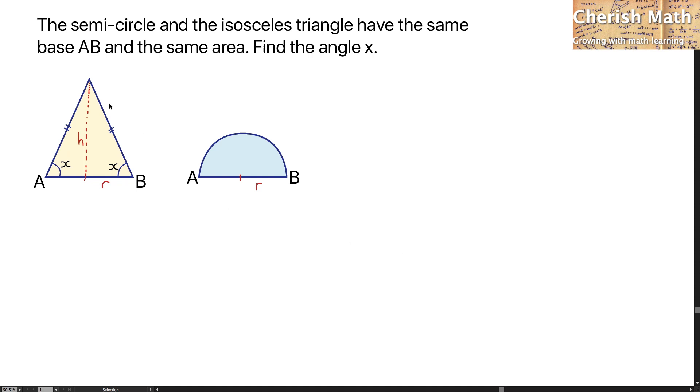I'm going to work out the area of this triangle using the formula one-half multiplied by the base width, multiplied by the height. The working here is one-half multiplied by the base width AB, which is twice R, multiplied by the height H.